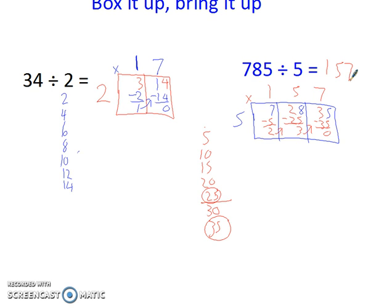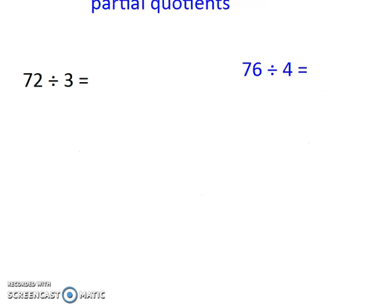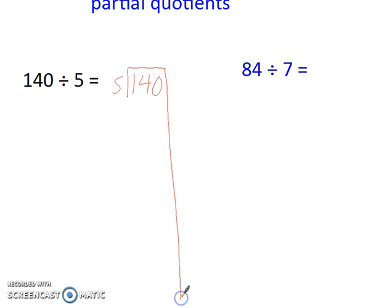Box it up, bring it up works a lot like the standard algorithm, except I'm bringing stuff up instead of down. Let's try a partial quotients one for you. Okay, so actually I want bigger numbers. I've got 140 divided by 5. So even when I set the problem up, it looks a little bit different. So I'm going to take this line and put it way down through here. Because this separates where I'm doing my subtraction work and the things where I'm doing my partial quotients.